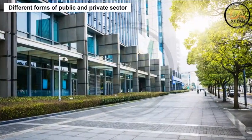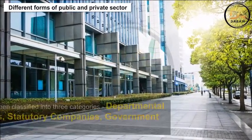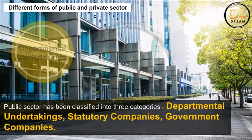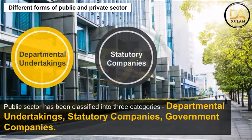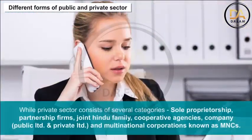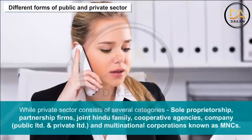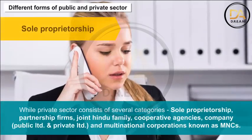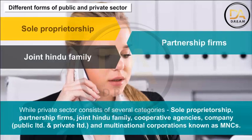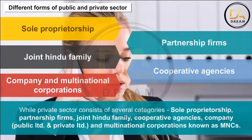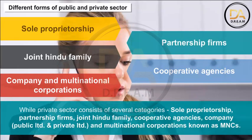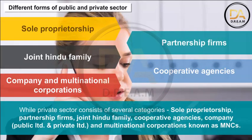Different forms of public and private sector. The public sector has been classified into three categories: departmental undertakings, statutory companies, and government companies. The private sector consists of several categories: sole proprietorship, partnership firms, joint Hindu family, cooperative agencies, company — public limited and private limited — and multinational corporations, known as MNCs.